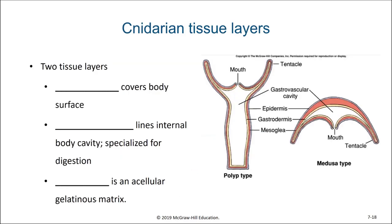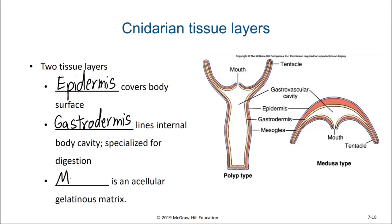Separated between them can be a gelatinous layer known as the mesoglea. When we look at these two tissue layers, the epidermis covers the body's surfaces, whereas the gastrodermis lines the internal cavity. We see a distinction here from the sponges, which lacked any sort of tissue structure or organization. The mesoglea is an acellular gelatinous matrix between these two types of tissues, and this makes up the jelly part of a jellyfish.